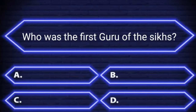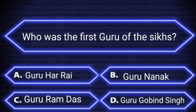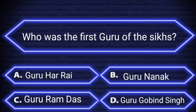Who was the first Guru of the six? A. Guru Har Rai. B. Guru Nanak. C. Guru Ram Das. D. Guru Gobind Singh. Your time starts now. The right answer is Guru Nanak.